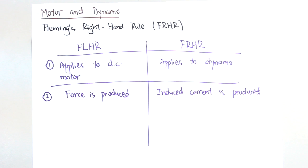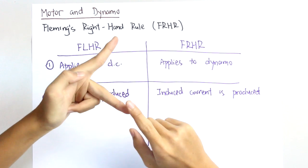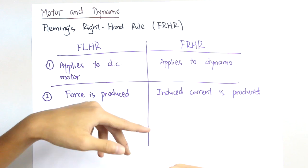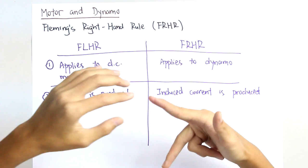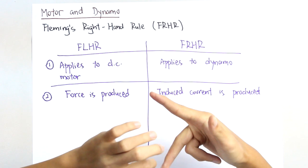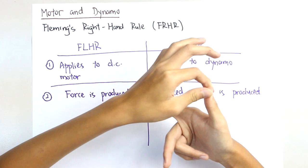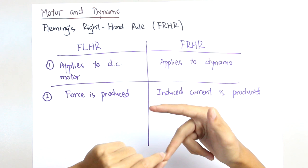What does it mean that force is produced versus induced current is produced? For the direct current motor, you are given a dry cell which provides current, and a permanent magnet which provides the magnetic field. So you have B and I, and from these two, force is produced. For Fleming's right-hand rule, you are also given a permanent magnet, but current is not given — instead, you are given the motion, the force. So you have F and B, and from these two, the induced current is produced.